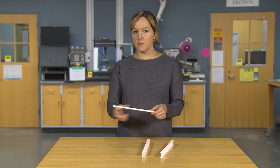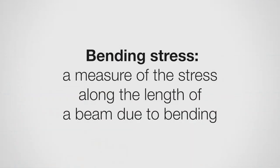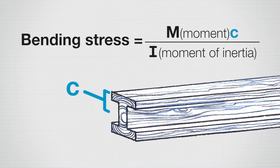The other thing we calculate with beams is a bending stress. It's a measure of the stress along the length due to bending. The equation for that is we take the moment and we multiply by a value called c, and c is half the height, typically. So it's the distance from our neutral axis, or our bending axis, or the neutral axis.